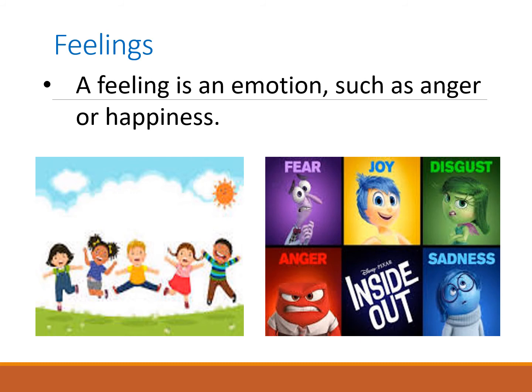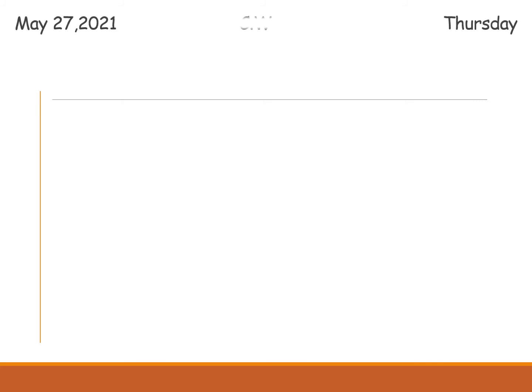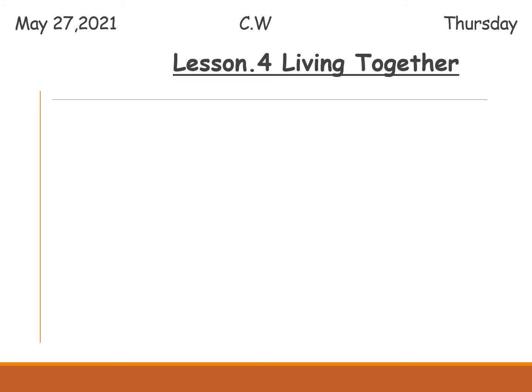Now let's start today's work. Everyone take out your notebook and write the day and date. Today's date is May 27, 2021, and the day is Thursday. On the first line, write the lesson name: Lesson Number 4, Living Together. Question number three: fill in the blanks.